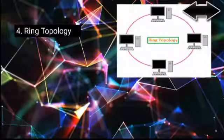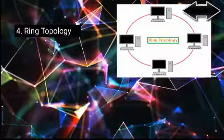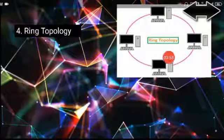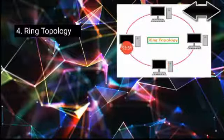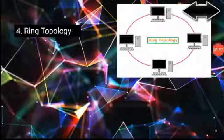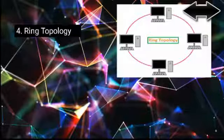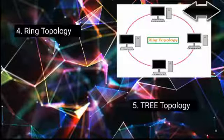The next type of topology is ring topology. As the name suggests, each computer — each peripheral — is connected to two adjacent systems, and this is how the ring arrangement is formed.